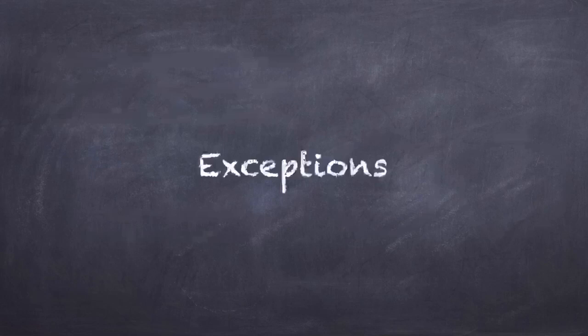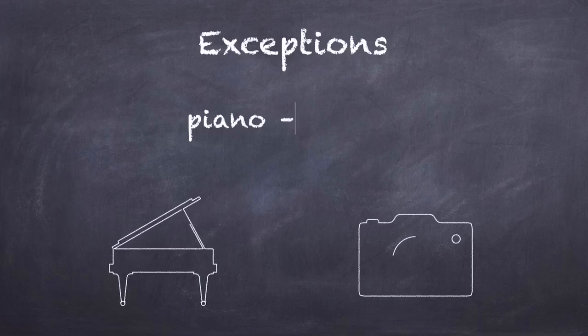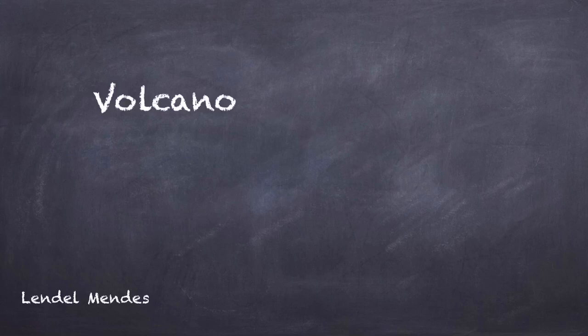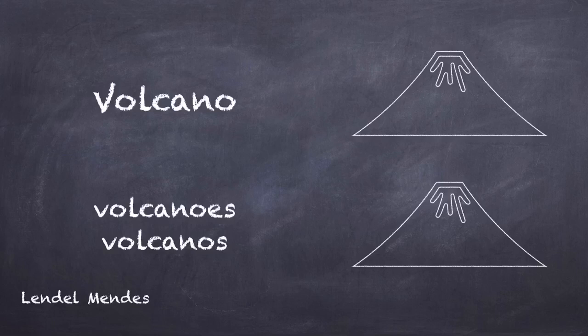But also we have some exceptions. There is the word piano that goes to pianos, photo and photos. You only add the letter S. And also, there is the exception of the word volcano that can be volcanoes, both with ES and S.